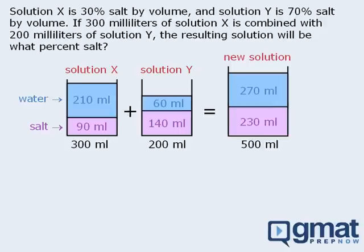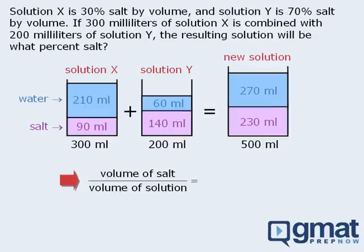If we express the salt concentration of the new solution as a fraction, it will equal the volume of salt over the total volume of the new solution. So in the new solution, there is 230 mL of salt and there is 500 mL of solution in total. When we convert this fraction to a percent, we get 46%. So the new solution is 46% salt by volume.